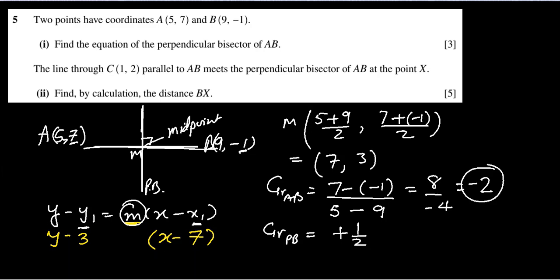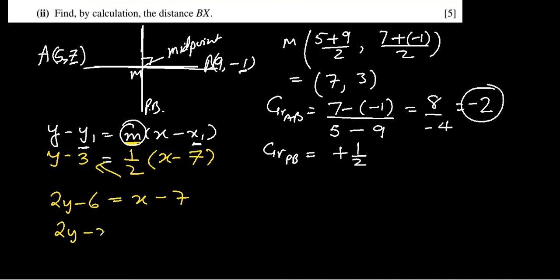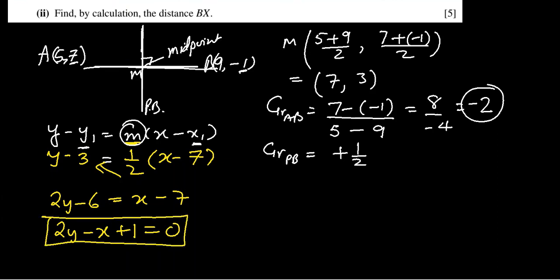Now we'll put it back into the equation to get the equation of the perpendicular bisector. m equals one half. This 2 multiplies to the left side, giving 2y minus 6, and 1 multiplies with x minus 7. Putting everything to the left side: 2y minus x minus 6 plus 7, which is plus 1, equal to 0. So this is the equation of the perpendicular bisector.